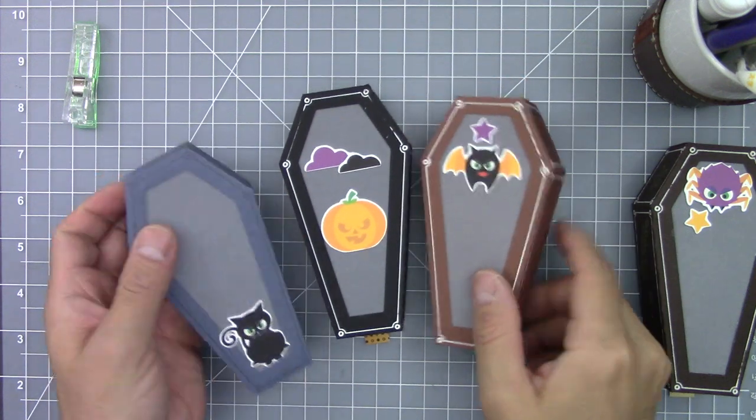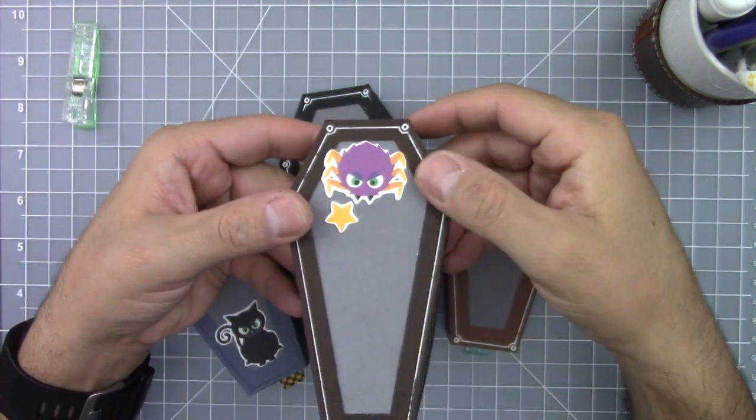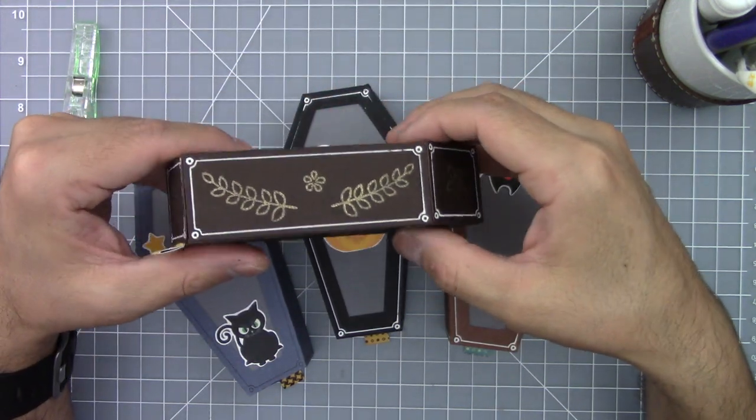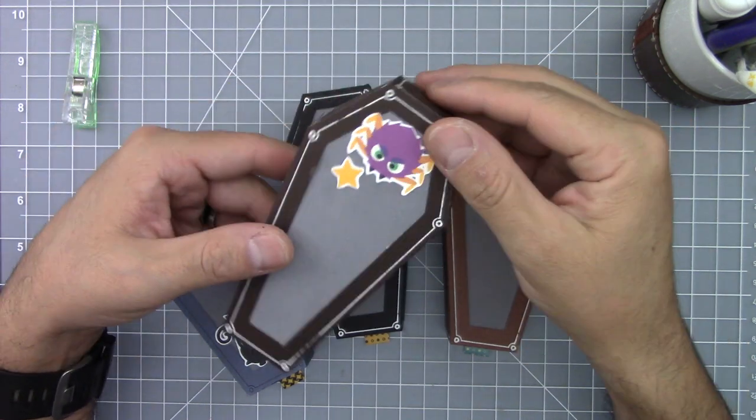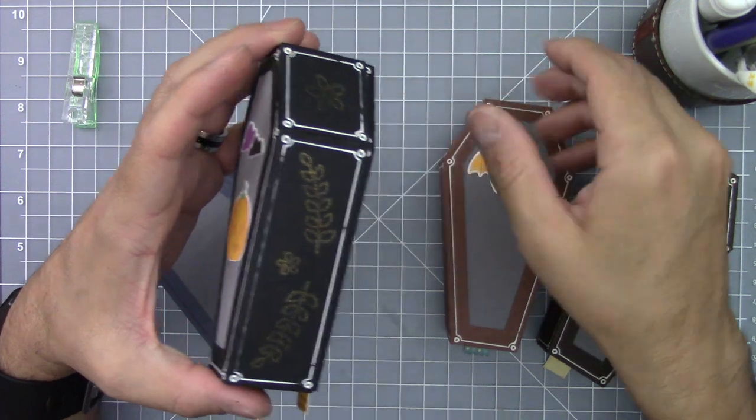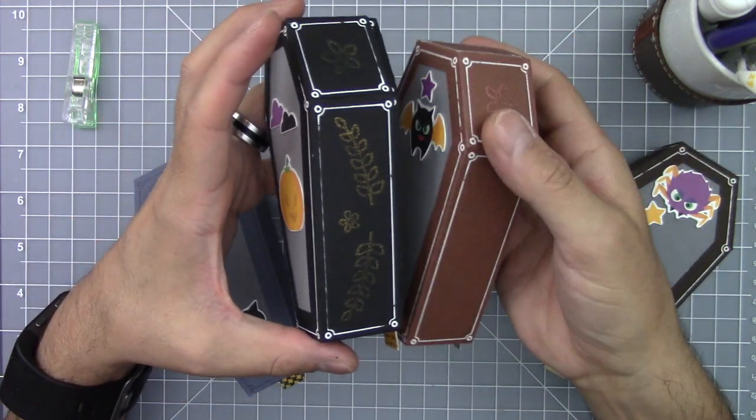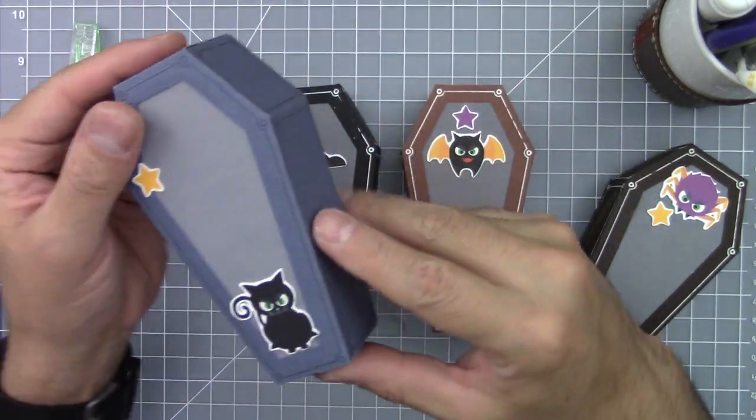Here are a couple more examples of some of the coffins I made. This one has the spider and a little star. I used a different color of inks depending on the color of the cardstock I used. And these are all Brilliance ink pads in different metallic shades.